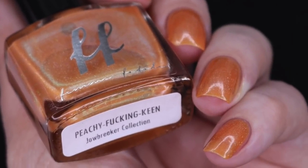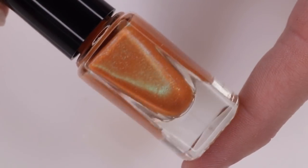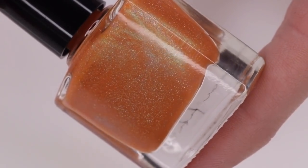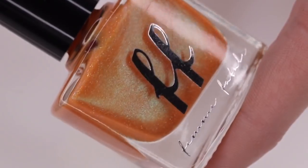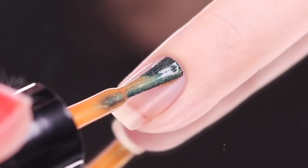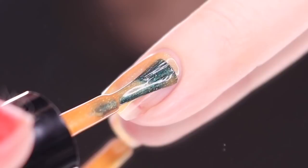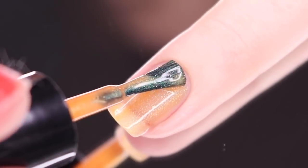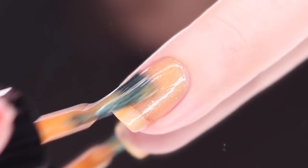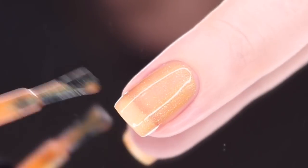Next up is Peachy Fucking King. This one is described as a summery papaya orange with turquoise gleam and holographic accents. It's going to be opaque in three to four thin coats. I think the holographic effect on this polish is a little bit more subdued. I did not get this one out in direct sunlight. So maybe that'll amp things up a bit.